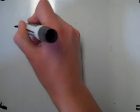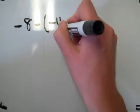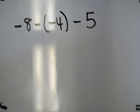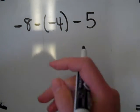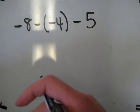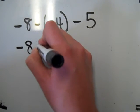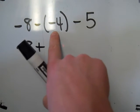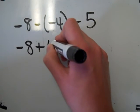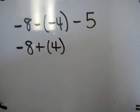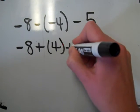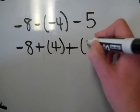One last problem. We're going to do negative 8 minus negative 4 minus 5. We have three numbers here — we just do the same thing. Every subtraction problem becomes an addition problem. So we have negative 8, change the subtraction to addition, and the opposite of negative 4 is positive 4. This changes to addition, and the opposite of positive 5 is negative 5.